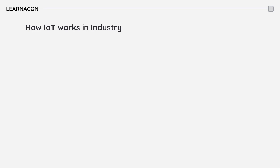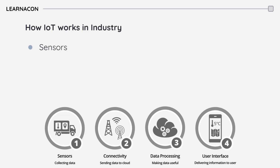Now we want to review how IoT works in the industry. It starts with sensors. Sensors gather data on various parameters such as temperature, pressure, and vibration. These sensors can be embedded in devices, machinery, or even the environment to monitor conditions in real time.